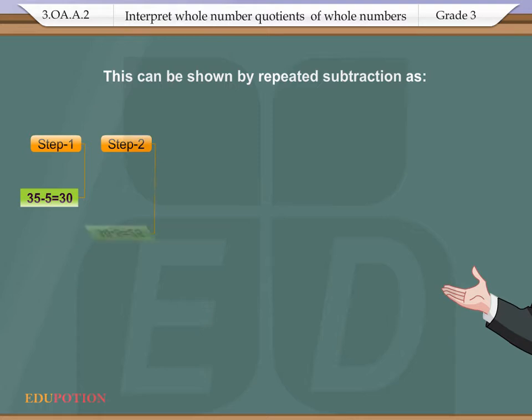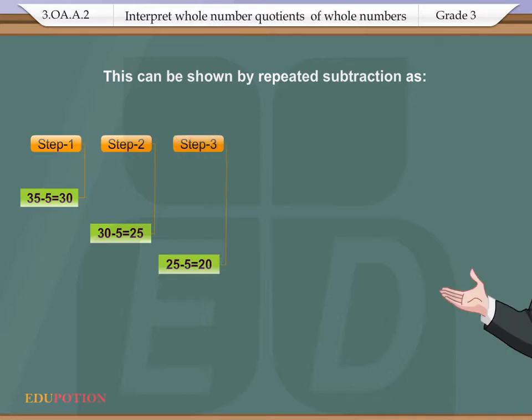30 - 5 = 25, which is step 2. 25 - 5 = 20 is step 3.